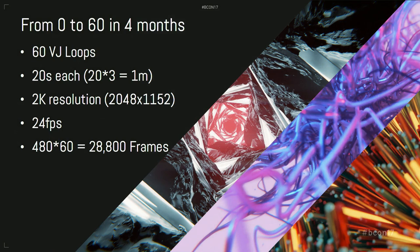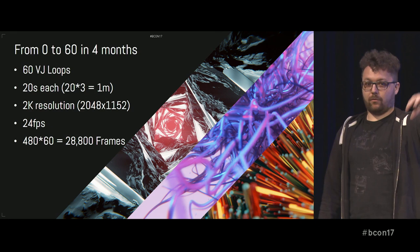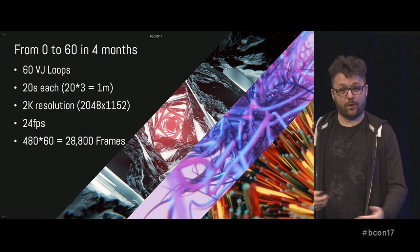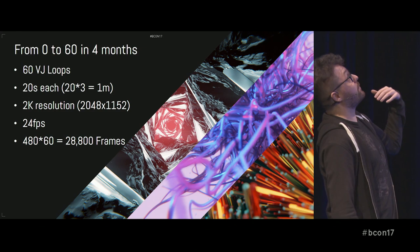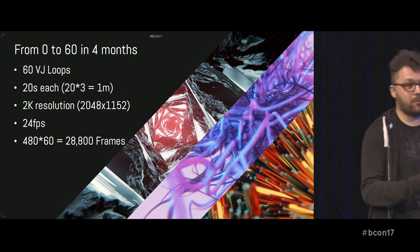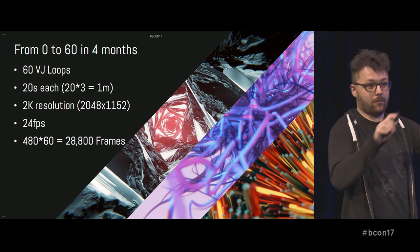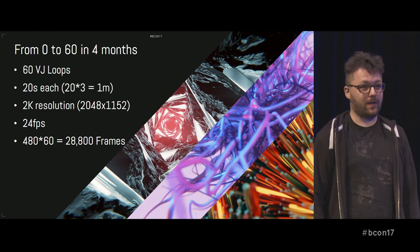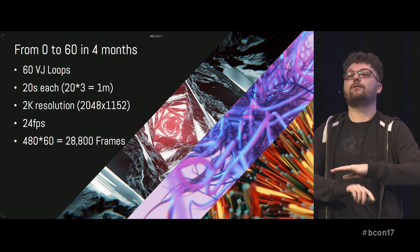I went from zero to 60 in four months. I'm really glad I did all of this presentation after the work was done, because if I would have seen a lot of these numbers, I would have gone — I'm not getting anywhere near that, this is just a giant pain. It's all personal work, it's not paid, so I have to do all the work in between as well. I wanted 60 loops, each 20 seconds, so if you loop them three times, you get a minute. They're all at 2K resolution, 24 frames a second — mainly because I have to render less frames. Even so, it's 28,800 frames total. If I would have known this in advance, I wouldn't have even started.